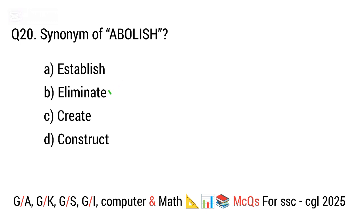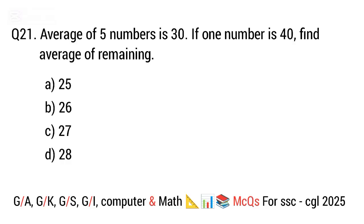Question 21. Average of 5 numbers is 30. If one number is 40, find the average of the remaining. The right answer is option A. 25.